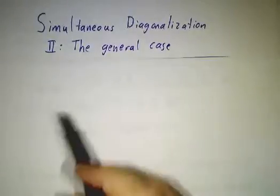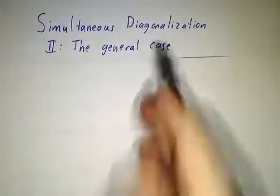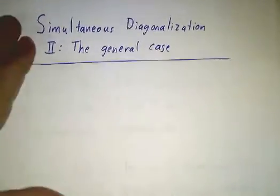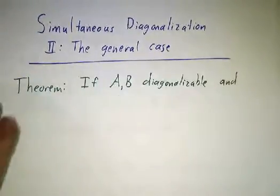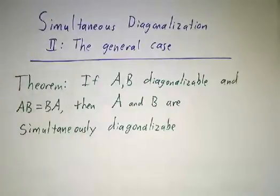In the last video, we worked out the theory of simultaneous diagonalization in the case that one of the matrices was non-degenerate, that is to say, when one of the matrices had all of its eigenvalues with multiplicity 1.